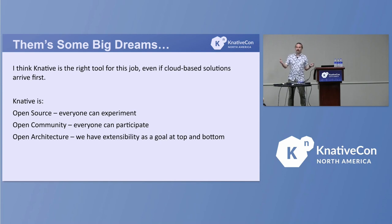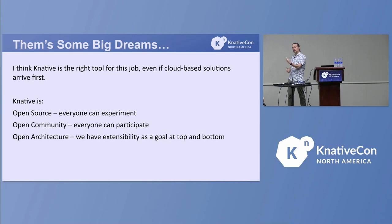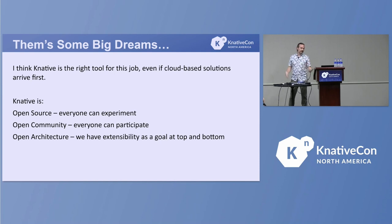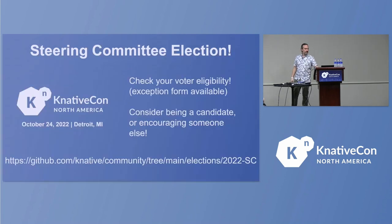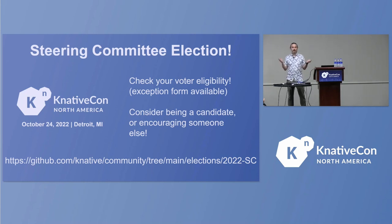We have extensibility as an architectural goal. We want people to be able to run Knative in production, but we also want to enable experimenters — and we don't want to break the production users with the experiments.